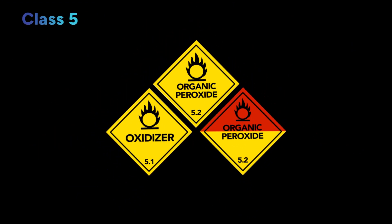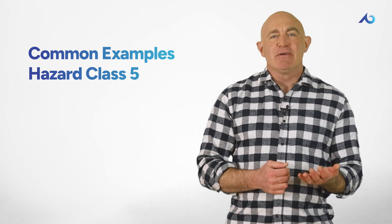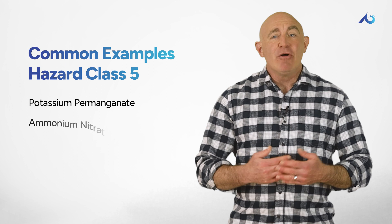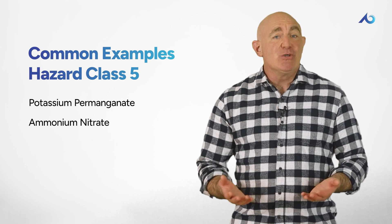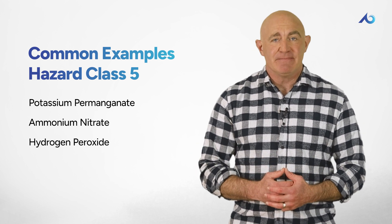Class 5 includes materials that can create a fire or keep on burning through an oxidation reaction. The peroxides in this category contain everything needed to start a fire on their own. Some common examples of hazard class five include potassium permanganate, ammonium nitrate used for fertilizing, and hydrogen peroxide.